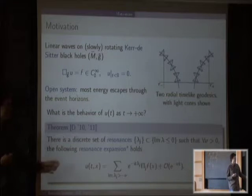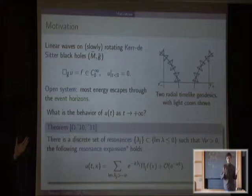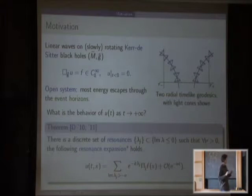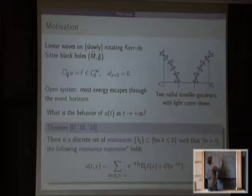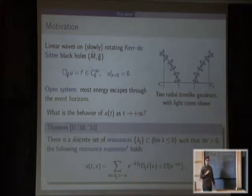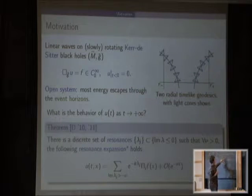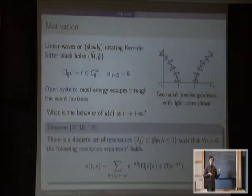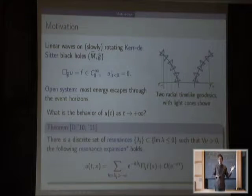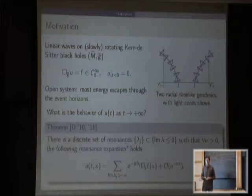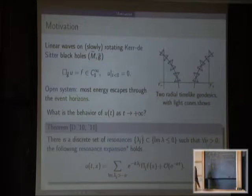Everything else decays exponentially in time. You can actually quantify this exponential decay: you can find an asymptotic expansion of the solution of the wave equation as time goes to infinity. Given an arbitrary constant ν, you can write the solution as a sum over resonances above the threshold — above this decay rate — plus O(e^{-νt}). This is an asymptotic expansion as t → ∞, because ν can only be something large but fixed.